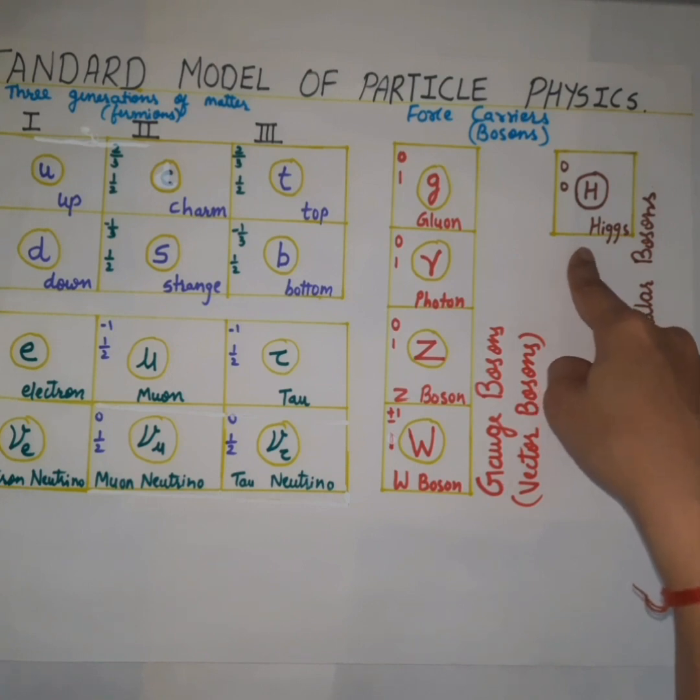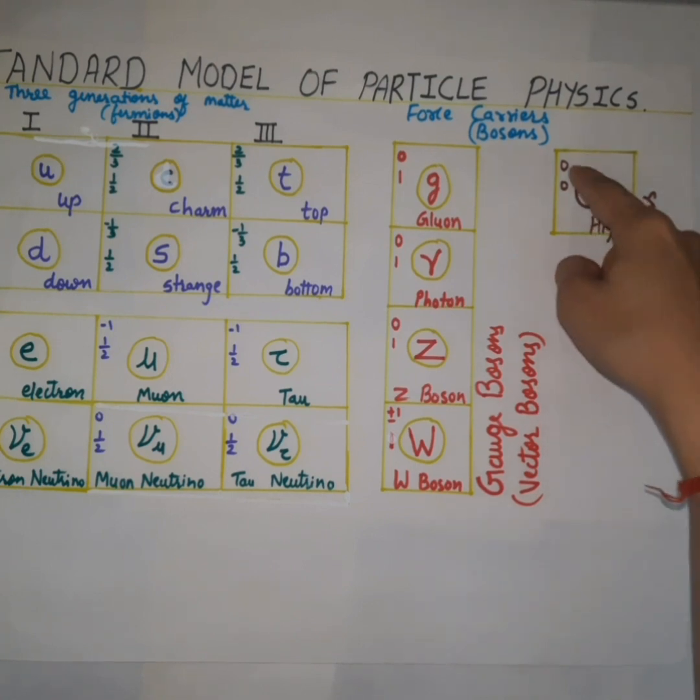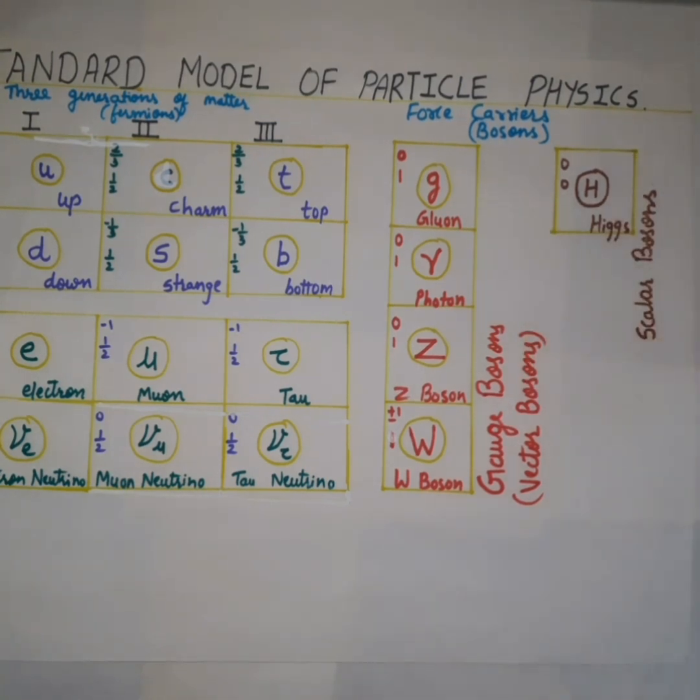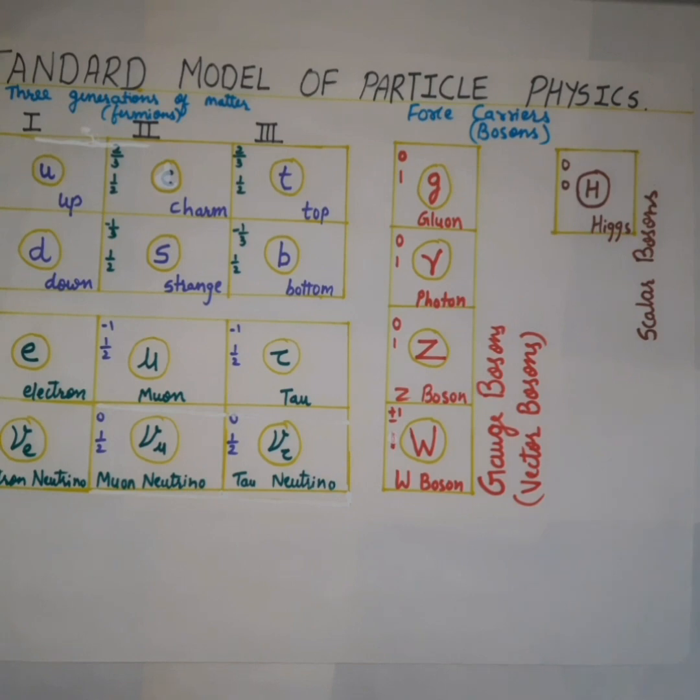Here the scalar boson, that is Higgs boson. The charge is also zero and the spin is also zero. The bosons which have zero spins are known to be scalar bosons. Higgs boson is a massive scalar boson with zero spin, no electric charge, and no color charge. It is associated with the Higgs field, the field that gives mass to other particles such as electrons and quarks. Higgs boson is also known as the God particle.